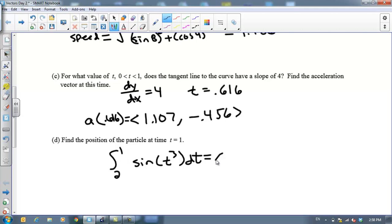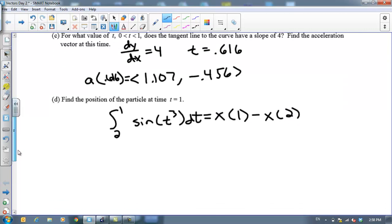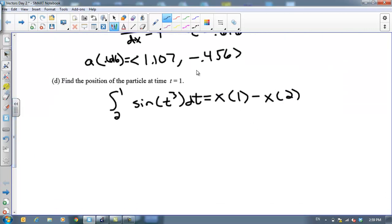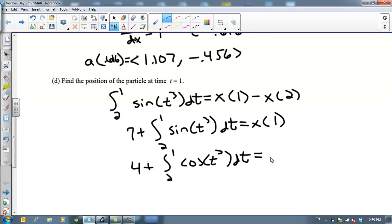I'm going to get my position at 1 minus my position at 2. And so using a little bit of algebra, I can solve for my position at 1 by adding x of 2 to the other side. And they told me that my x coordinate at 2 was 7. So 7 plus my integral from 2 to 1 of sine of t cubed dt is going to give me my x coordinate at 1. Using the same process for my y coordinate, I get that my original y value of 4 plus the integral from 2 to 1 of y prime of t.